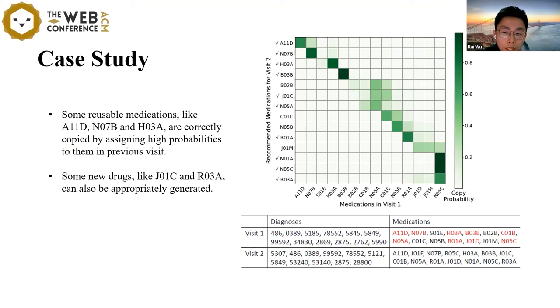Also, we present an example patient in MIMIC-3 to illustrate how our COGNet conducts the copy mechanism to improve medication recommendation. You can see this patient visited the hospital twice, and due to space constraints, we use the international ICD code to represent the diagnostic results, and the ATC classification system to represent medication. At the first time, the patient was mainly diagnosed with A11D, N07B, etc. Later, the patient returned for a second visit. In addition to the previously diagnosed diseases, the patient also had some new diseases. We visualized the copy probability computed by copy module at each decoding step of recommending the medication for the second visit.